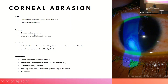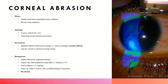Examination: fluorescein staining, look for linear orientation. Importantly, satisfy yourself that there's no associated infection — abrasions are clear with no opacity. Ask yourself: is this just an uncomplicated abrasion or is there an associated white infiltrate? Make sure you also look for foreign bodies, as it's easy to have an abrasion and miss a foreign body.